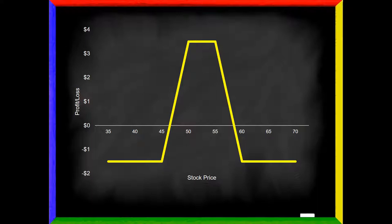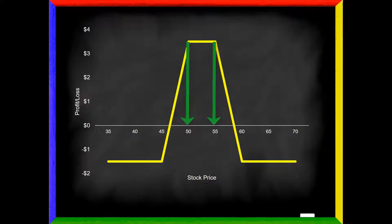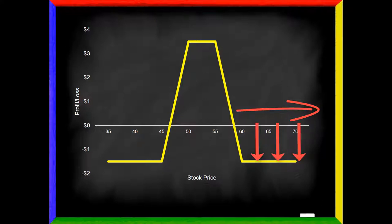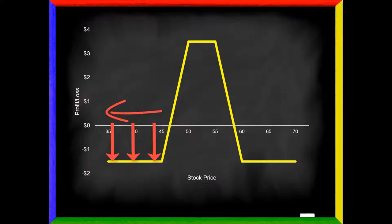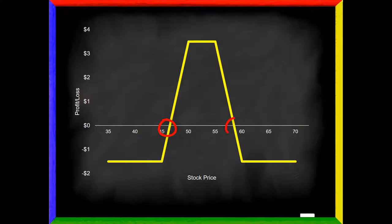Here's another strategy called a condor. I can quickly tell I have four strikes — one at 45, one at 50, one at 55, and one at 60. This is one of many neutral strategies in options trading. We want the stock price to stay relatively quiet. The highest profit is between 50 and 55. If the stock heads too far in either direction it pushes me into losses. My break-even points are 46.50 on the left and 58.50 on the right, so as long as the stock stays between those levels I will make something from this strategy.